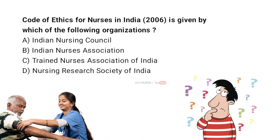Code of ethics for nurses in India is given by which of the following organizations? A. Indian Nursing Council. B. Indian Nurses Association. C. Trained Nurses Association of India. D. Nursing Research Society of India. And the correct answer is D.